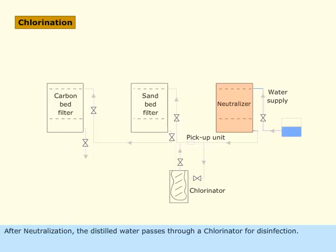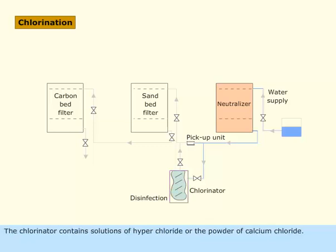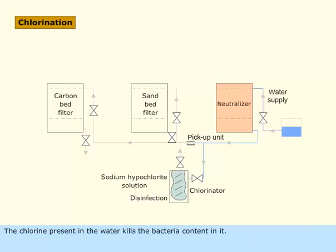After neutralization, the distilled water passes through a chlorinator for disinfection. The chlorinator contains solutions of hyperchloride or the powder of calcium chloride. The chlorine present in the water kills the bacteria content in it.